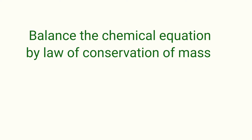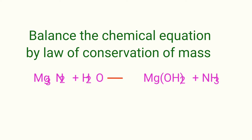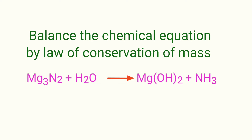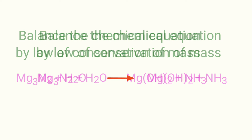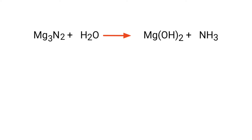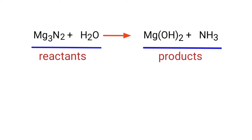Balance the chemical equation by law of conservation of mass. Magnesium nitride plus water gives us magnesium hydroxide plus ammonia. In this equation the reactants are magnesium nitride and water, and the products are magnesium hydroxide and ammonia.